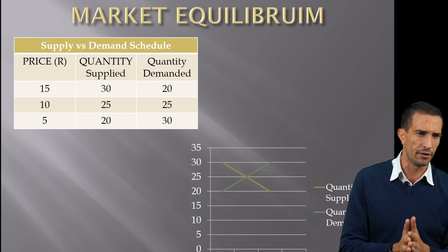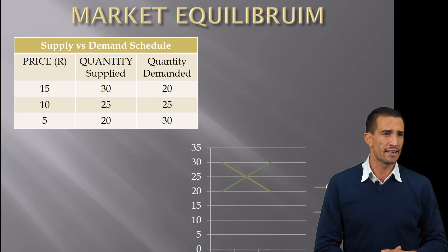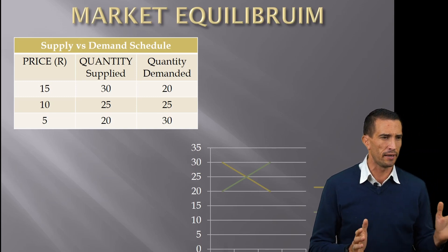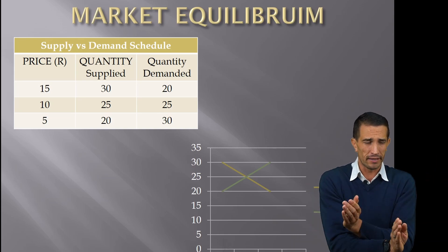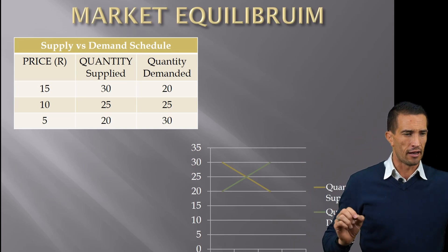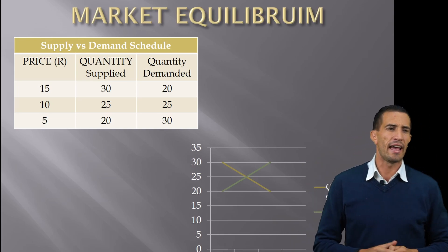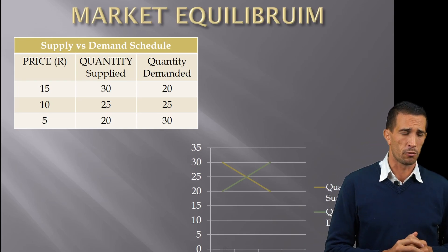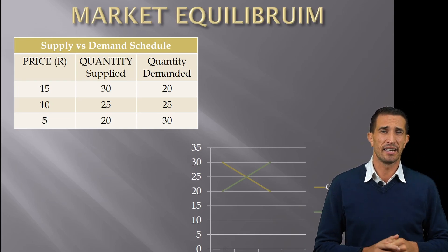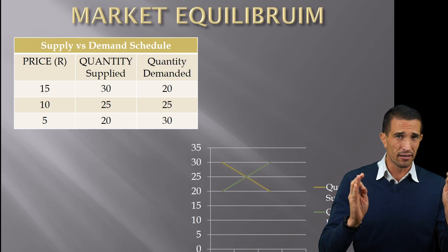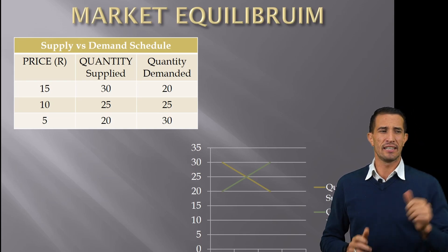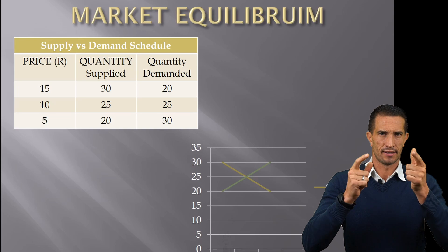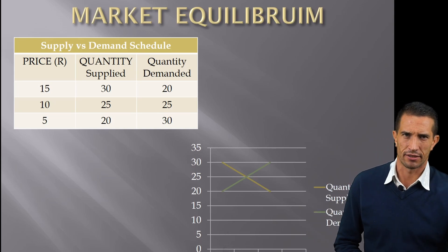On the market equilibrium slide, the yellow line shows quantity supplied — at 15 Rand there are 30 units — and the green line shows quantity demanded — at 15 Rand there are 20 units. Drawing both line graphs and finding their intersection gives us market equilibrium. Make sure you watch the practical video next to see how it's done.